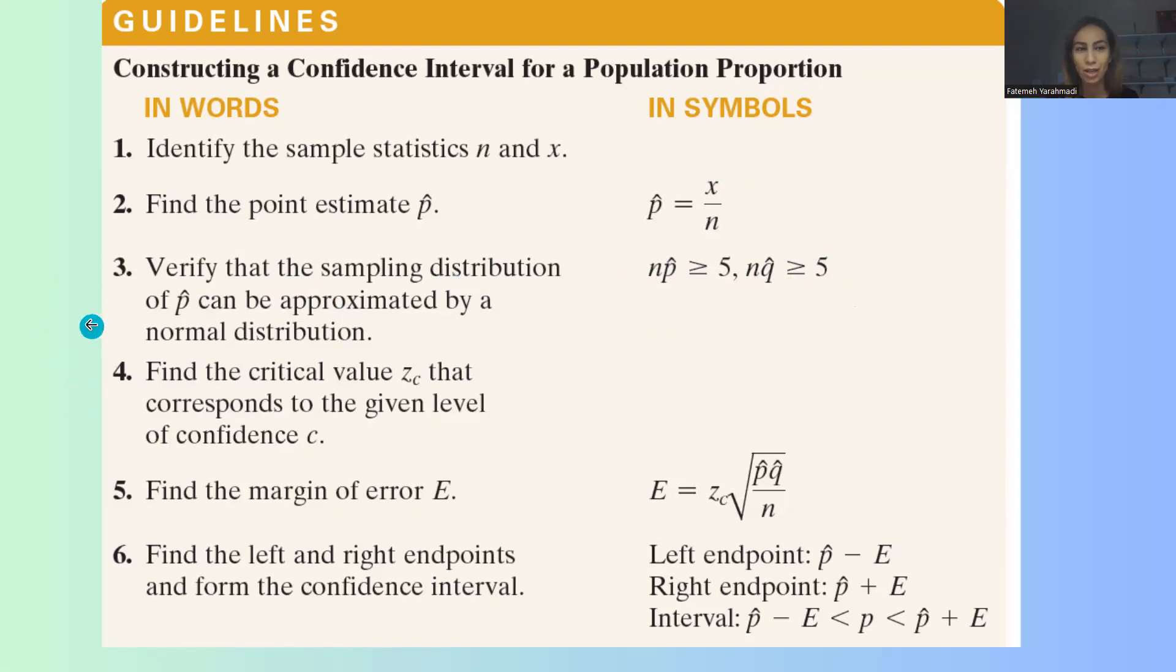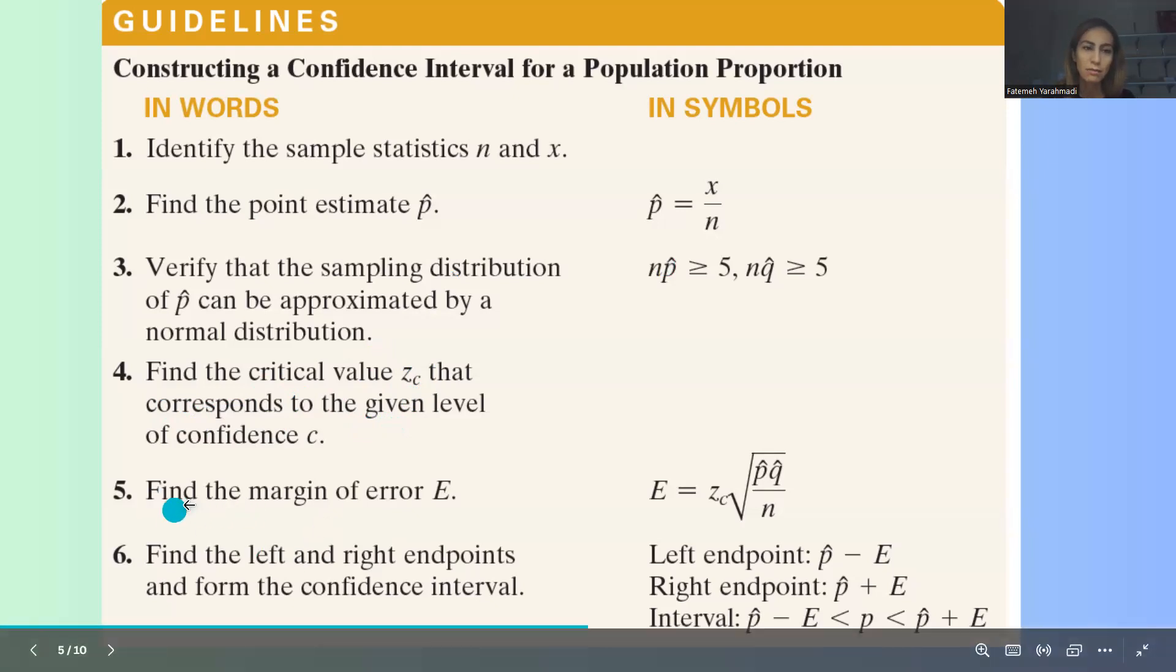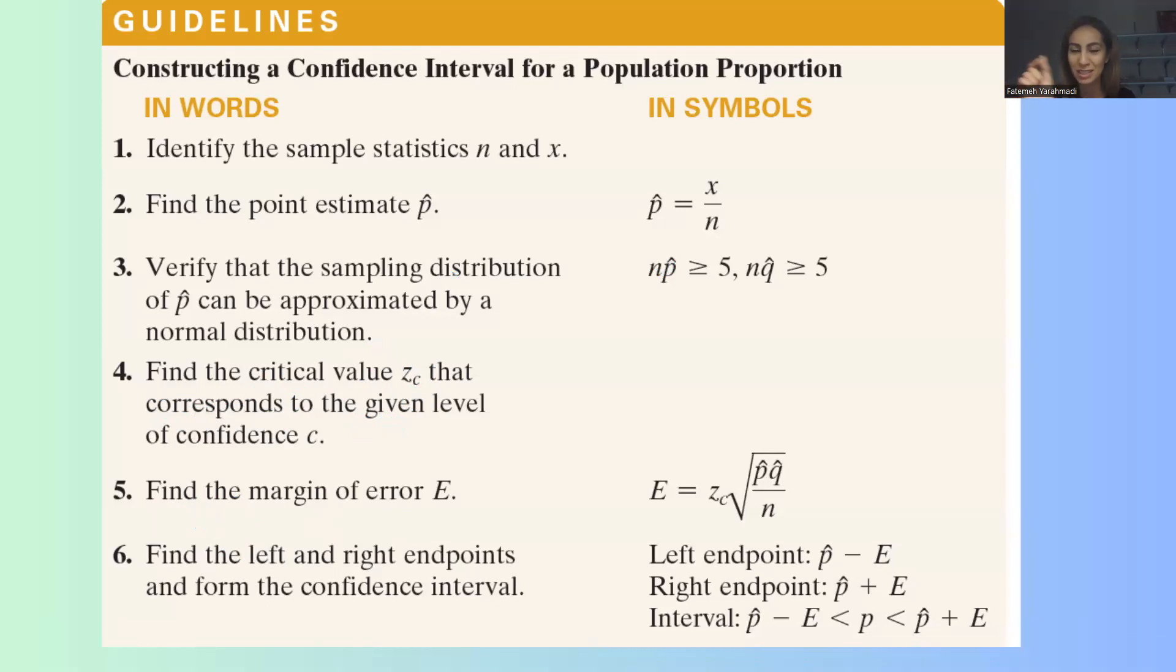After we're done, we go to the next step, step 4, which is finding the critical value z sub c that corresponds to the given level of confidence c.